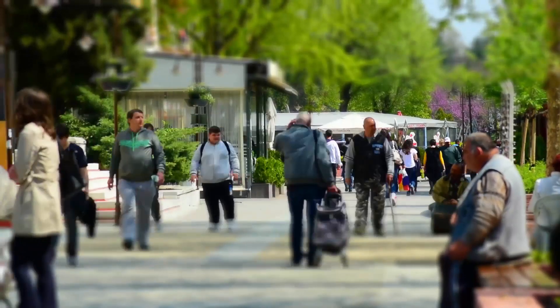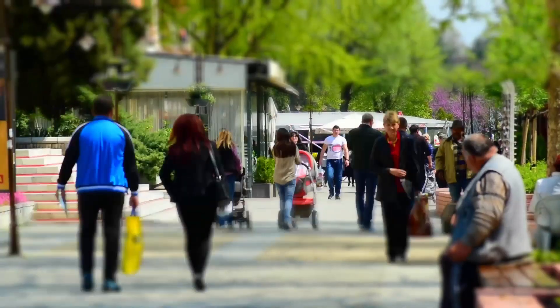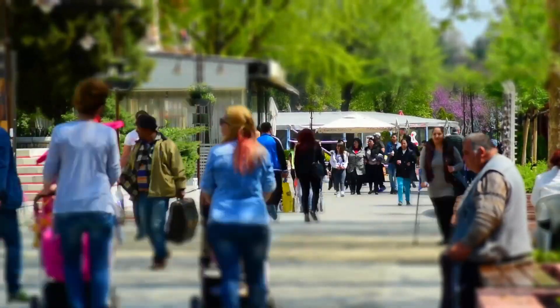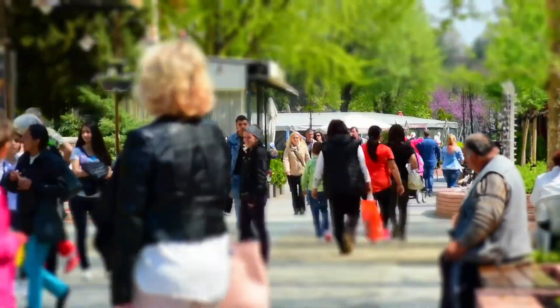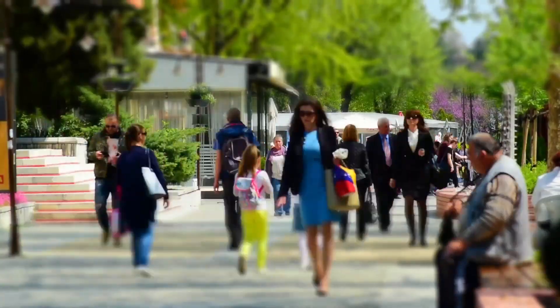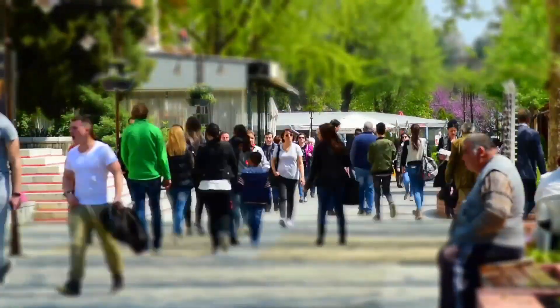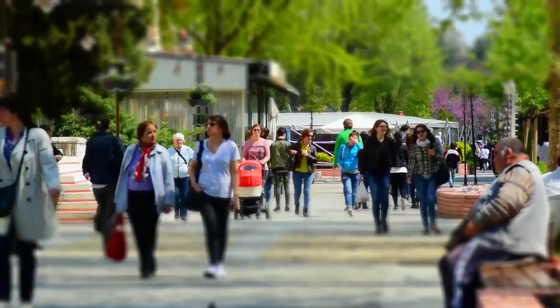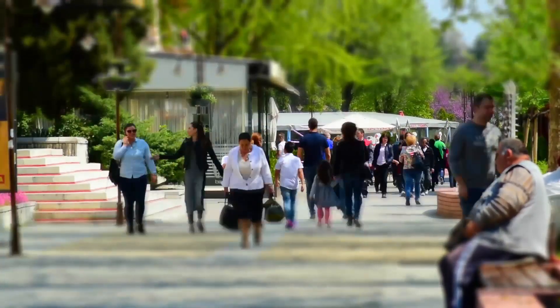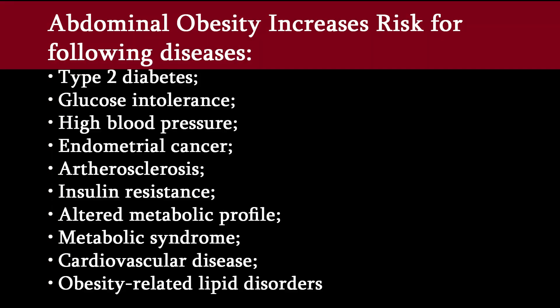Visceral and central abdominal fat and waist circumference show a strong association with type 2 diabetes. Excess fat in this area can lead to the release of fatty deposits into the bloodstream. Fatty build-up in the blood is responsible for the majority of negative health consequences associated with obesity, such as type 2 diabetes,